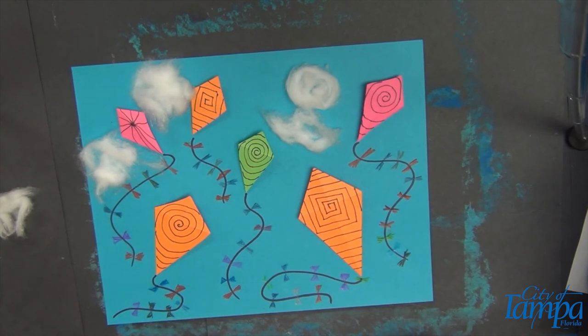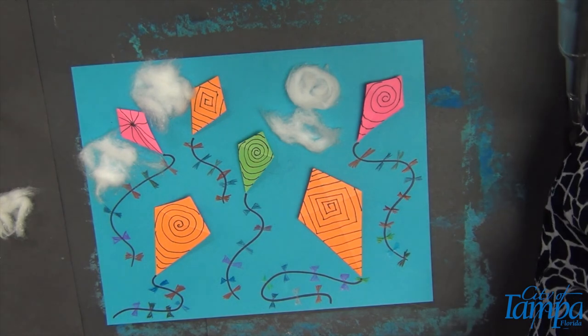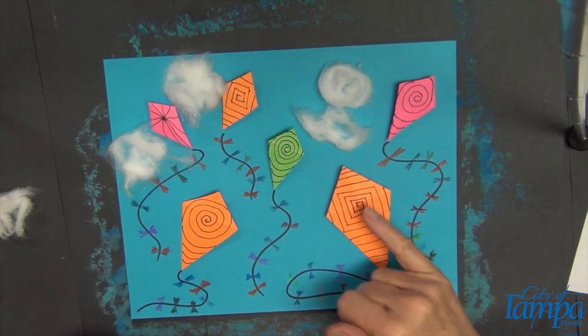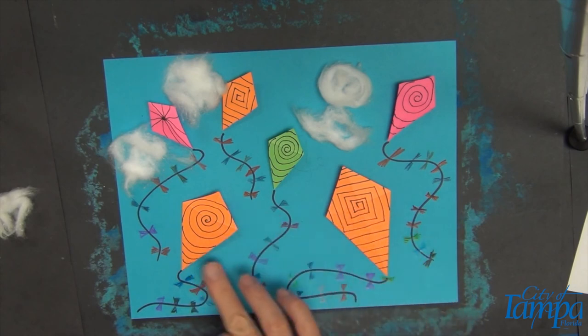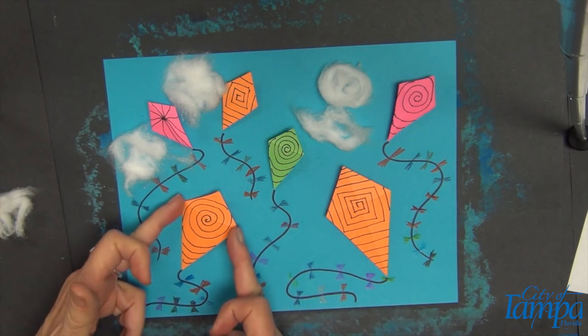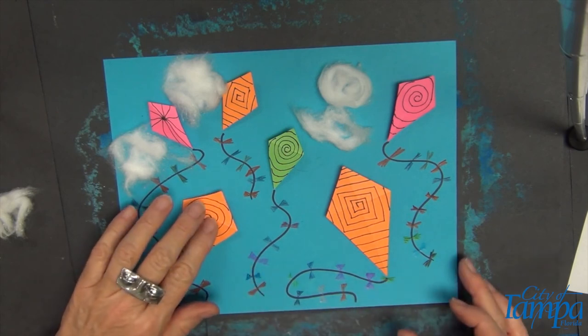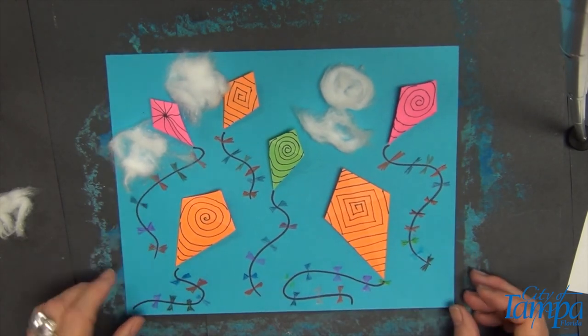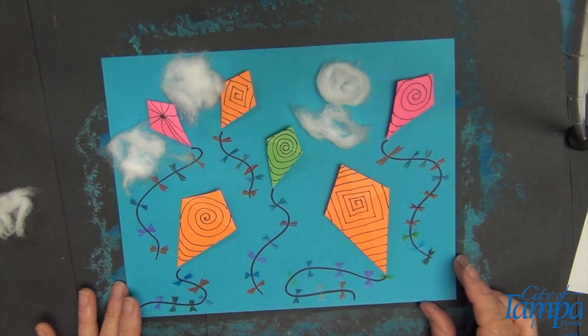So, just to review, our lesson today was texture and movement as two of the elements of art. And as you can see, we added some texture when we drew in our lines on our kites. We added some movement by allowing our tails to curl. We also added movement by bending our kite and standing them off the surface, so it looks like they are moving in the breeze.